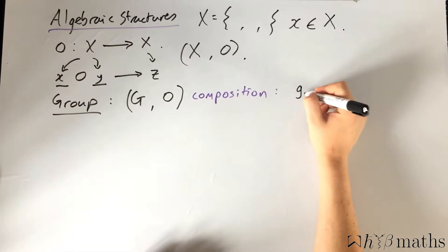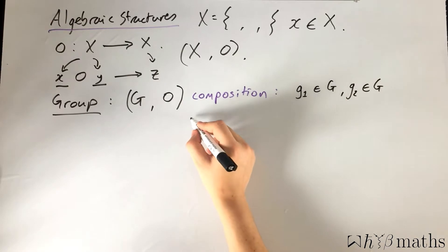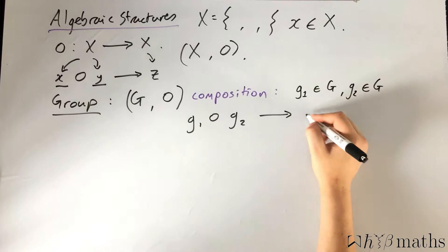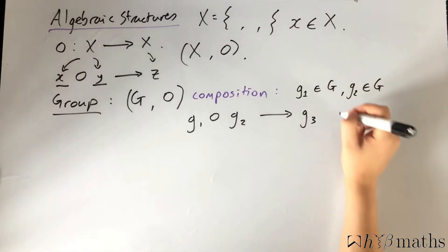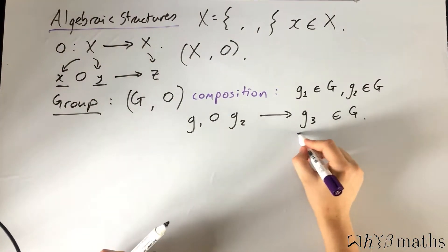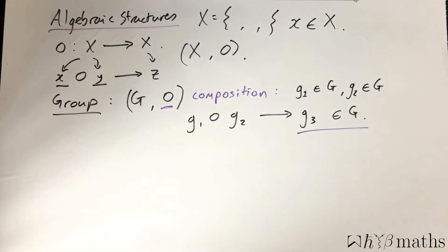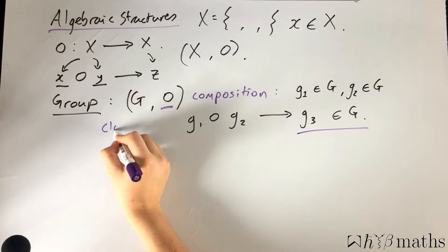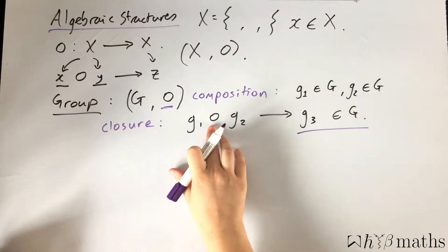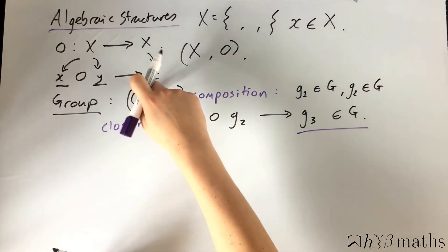simply takes two elements from the group, I'm going to call this little g1 and little g2, and this composition map maps those two elements to a third element which is in the group. That's the key point. This is in fact one of the so-called axioms or rules that this composition operation must satisfy, known as the closure axiom. If you take two group elements and you compose them, they are always mapped to a third element which is in the group.